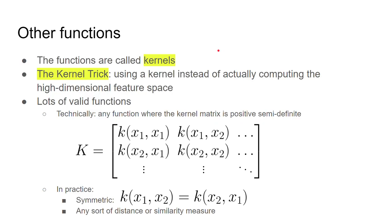Those functions — instead of computing phi(x_i)·phi(x_j), computing some function of x_i and x_j — are called kernels. The trick of using the kernel instead of actually going to that high dimensional space is called the kernel trick. There are tons of valid functions that could be used here. Technically, when building up the optimization problem, you have to compute this for every i and j and put it in a big matrix. That matrix has to be positive semi-definite — importantly, it must be symmetric, so calling the function on (x1, x2) must give the same result as (x2, x1). Anything acting as a distance or similarity measure will generally work.